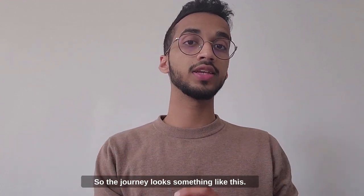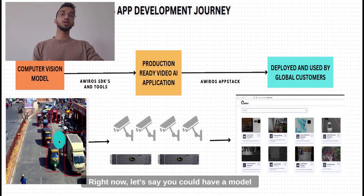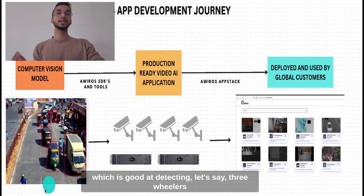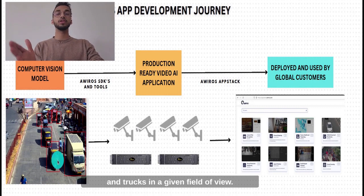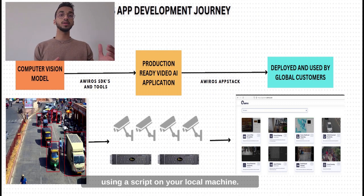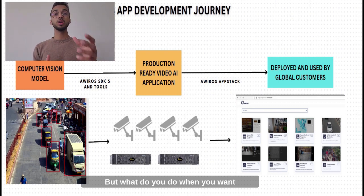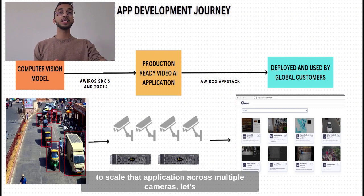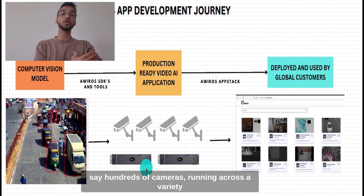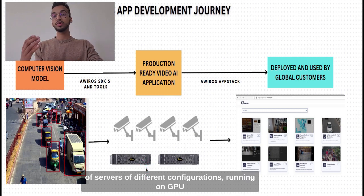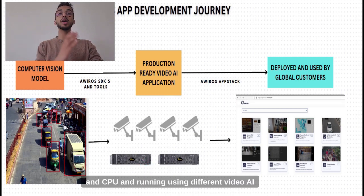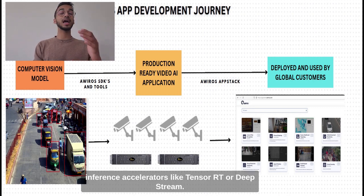The journey looks something like this. Right now let's say you have a model which is good at detecting three-wheelers and trucks in a given field of view. That's just a model you run using a script on your local machine. But what do you do when you want to scale that application across multiple cameras — hundreds of cameras — running across a variety of servers with different configurations, running on GPU and CPU, and using different video AI inference accelerators like TensorRT or DeepStream?